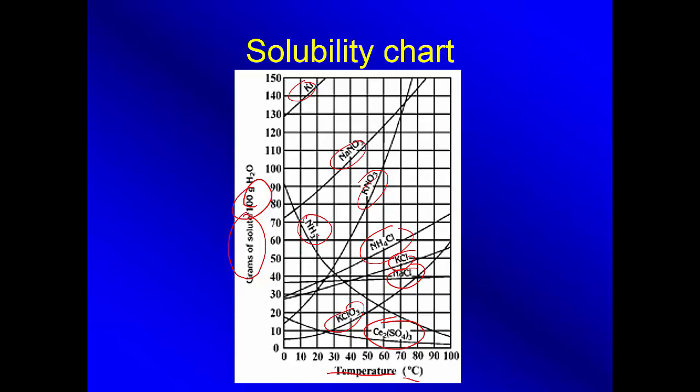There's the one here. This is actually ammonia. We're going to talk about that in a little bit. That's a gas. There are a few compounds that don't change very much, or it actually decreases. That's why we said usually.